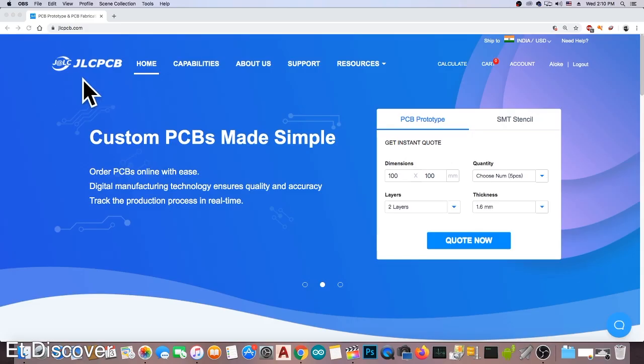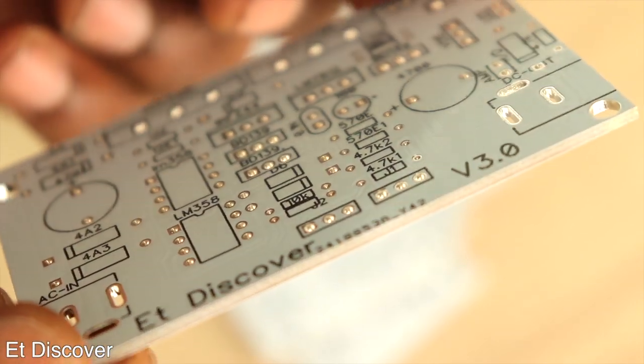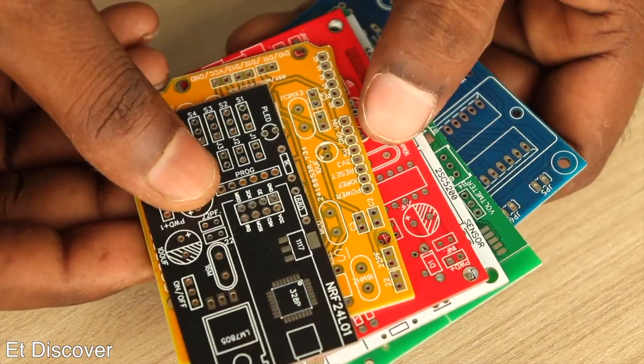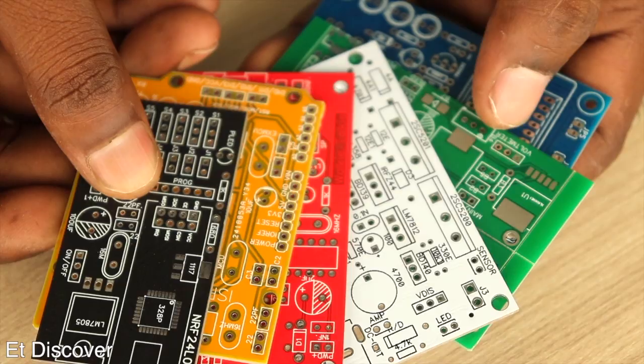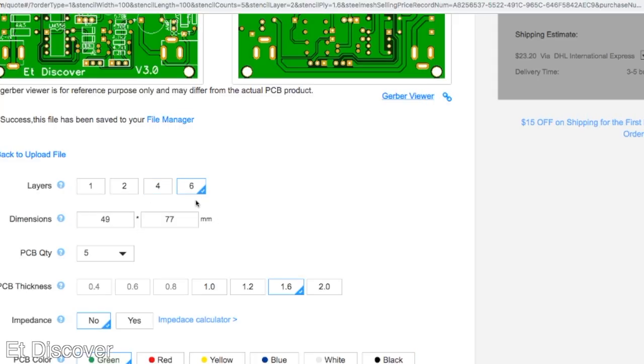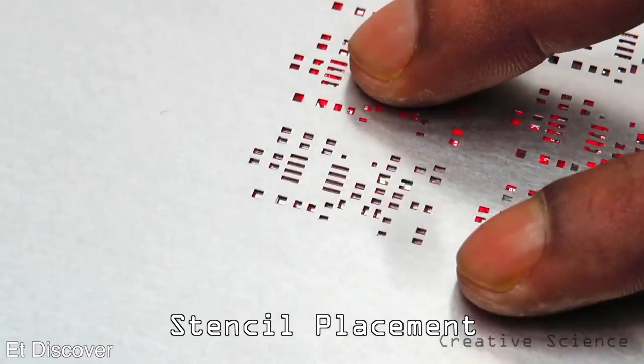This video is sponsored by JLCPCB. Without JLCPCB this video would not be complete. JLCPCB makes great PCBs with 10 years experience. Not only that, they make 6 layer PCBs with stencil seal. I think this is insane.